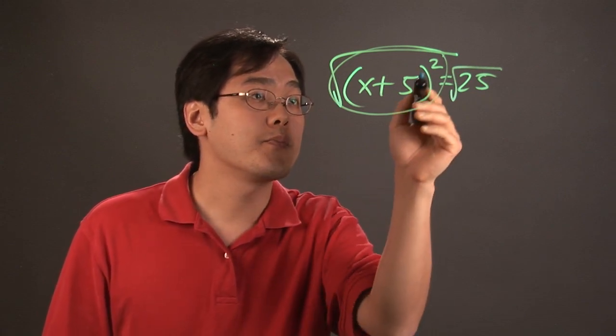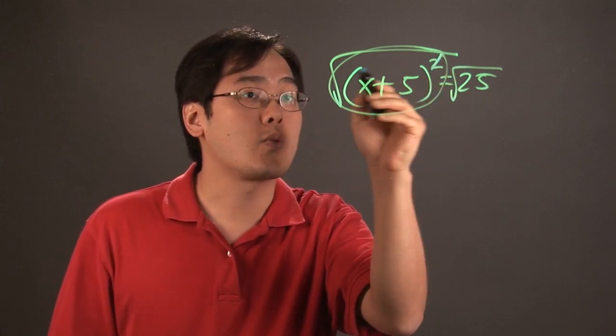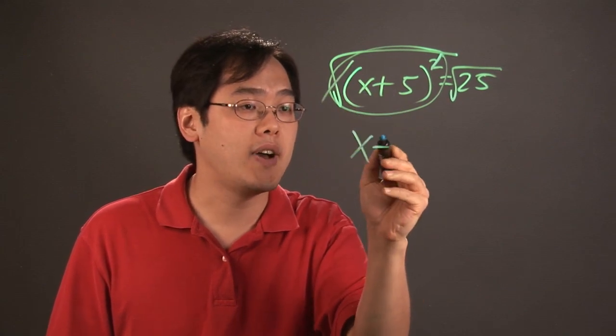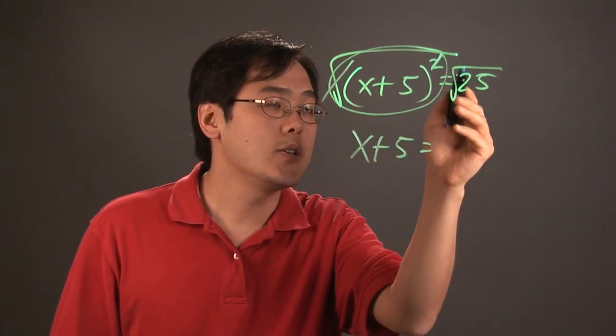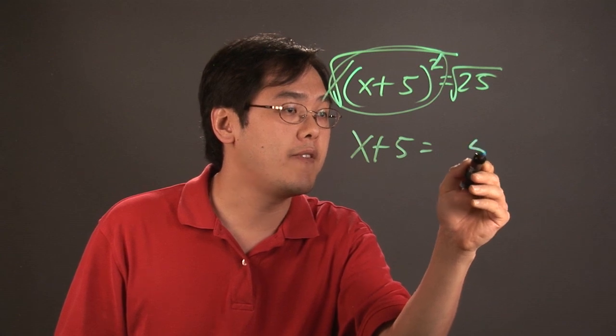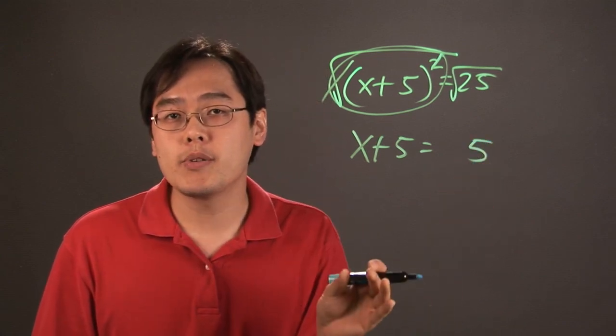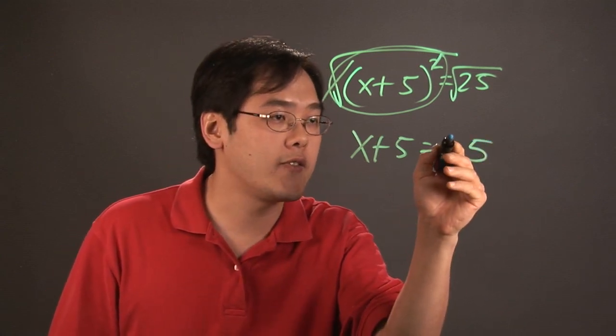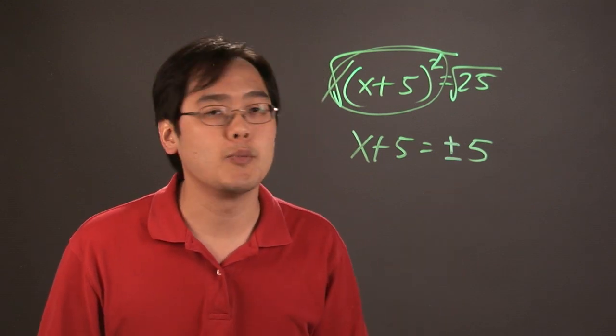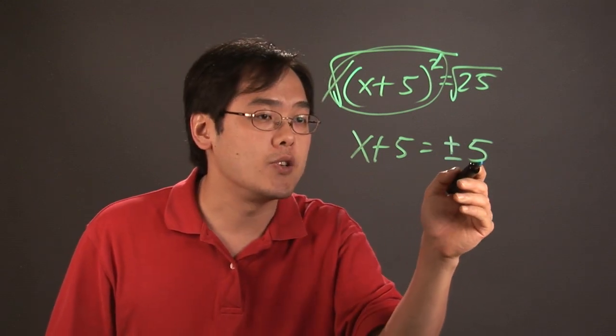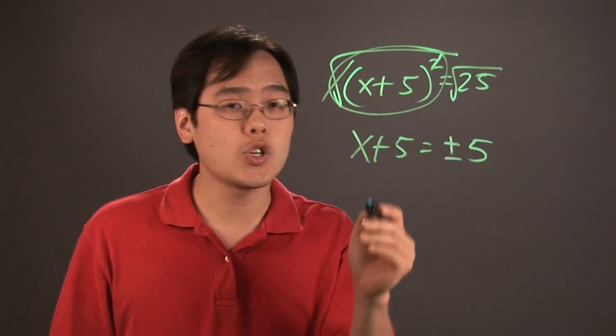So what happens here is the square and the square root both cancel. You're left with x + 5 on the left, and then square root of 25 is going to be 5. But because you're taking the square root of both sides, one of the things you want to keep in mind is you have to put the plus or minus symbol there because two answers would solve this equation.